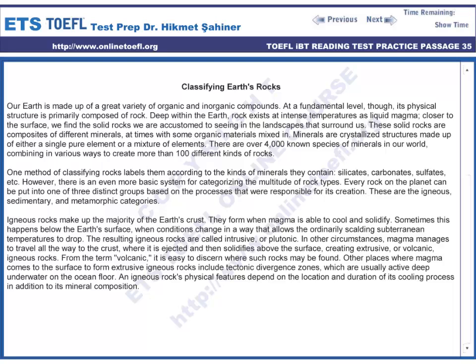Classifying Earth's Rocks. Our Earth is made up of a great variety of organic and inorganic compounds. At a fundamental level, though, its physical structure is primarily composed of rock. Deep within the Earth, rock exists at intense temperatures as liquid magma. Closer to the surface, we find the solid rocks we are accustomed to seeing in the landscapes that surround us. These solid rocks are composites of different minerals, at times with some organic materials mixed in. Minerals are crystallized structures made up of either a single pure element or a mixture of elements.